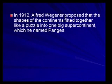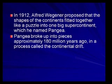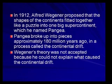In 1912, Alfred Wegner proposed that the shapes of the continents fitted together like a puzzle into one big supercontinent which he named Pangaea. You must know the supercontinent's name was Pangaea. Pangaea broke up into pieces approximately 180 million years ago in a process called continental drift. Wegner's theory was not accepted because he could not explain what caused this continental drift. Scientists of that era didn't have the technology we have today, yet they stuck to their theory based on the best proof they could find, and others couldn't disprove it either.